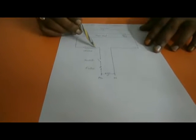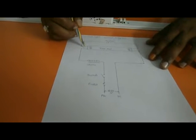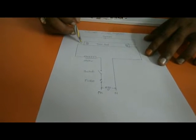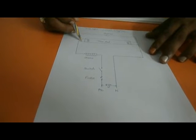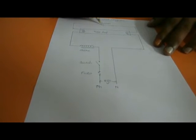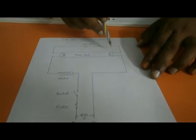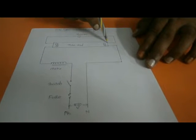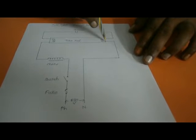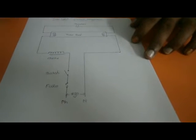The phase wire goes to the fuse, then to the switch, and then to the choke of the tube. The other end of the choke will go straight to one terminal of the tube light, and the other end of the tube light goes to the starter. The second end of the starter goes to the second terminal of the tube light.